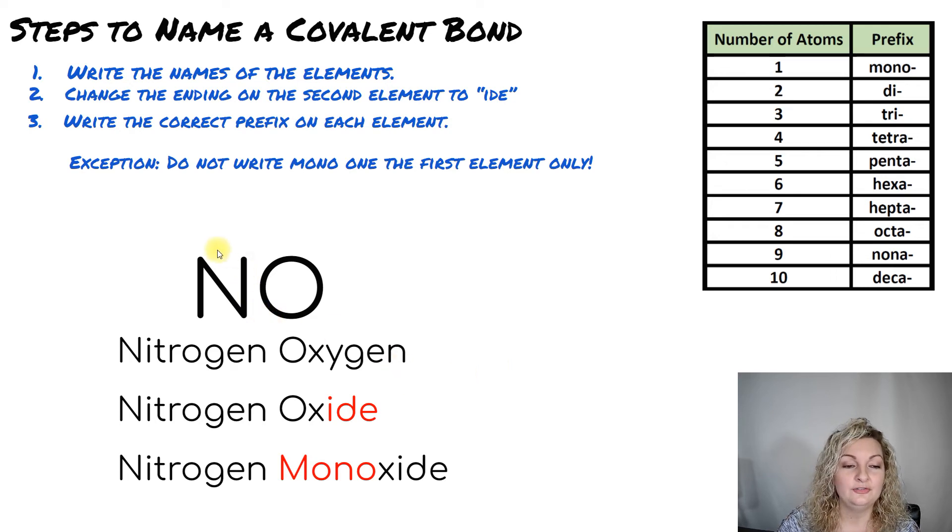So if you have one on the first element, you're not going to write mono. It's just implied that we have one. So go ahead and leave that off. And you're just going to leave it the original name of the element. So just nitrogen for this example.